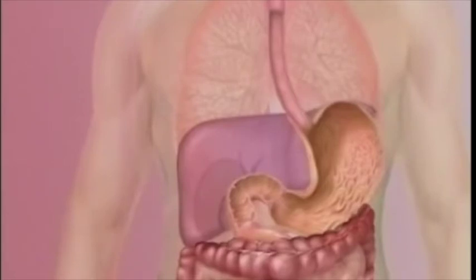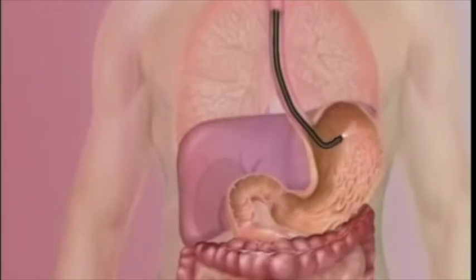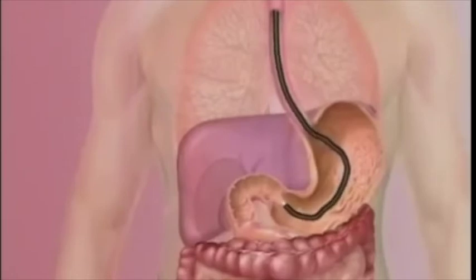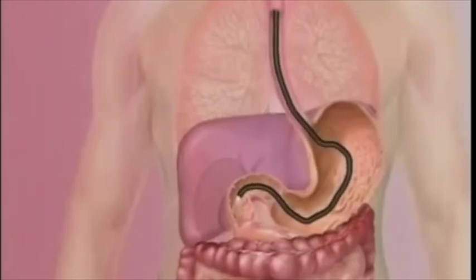Your doctor will use a long, thin tube, called a video endoscope, to see inside your upper digestive tract. Various controls allow your doctor to move the scope around curves, showing a complete picture of your upper digestive system.